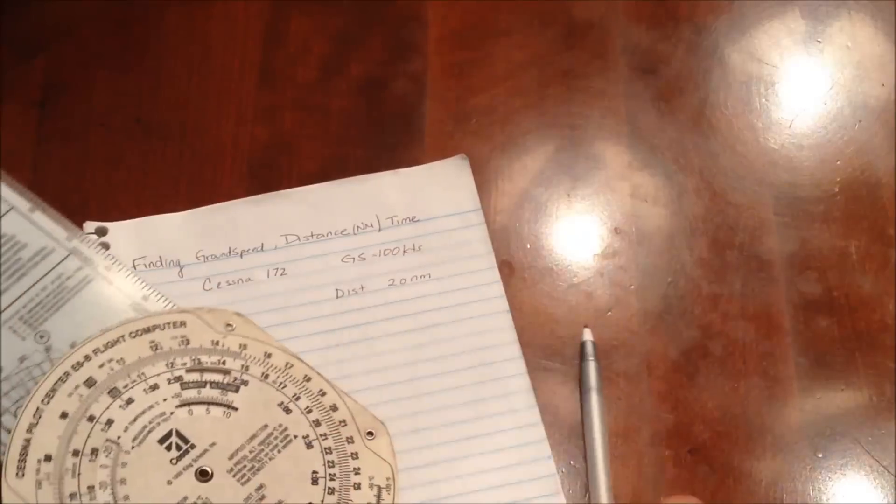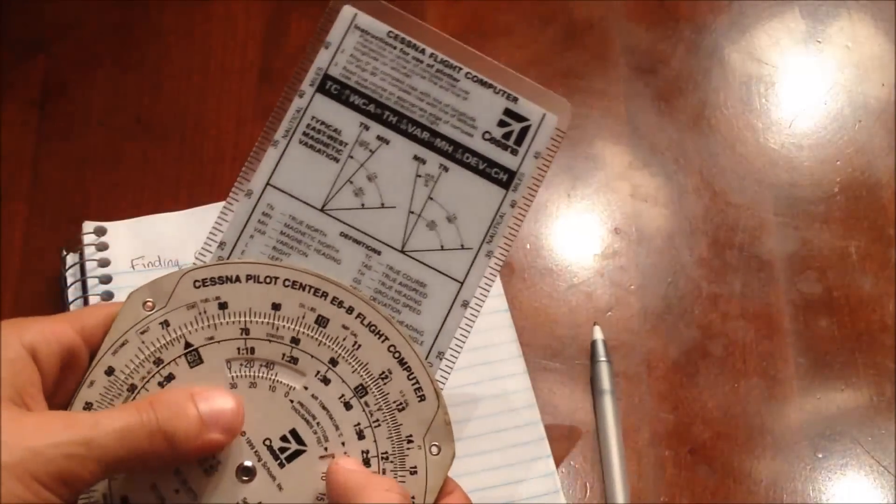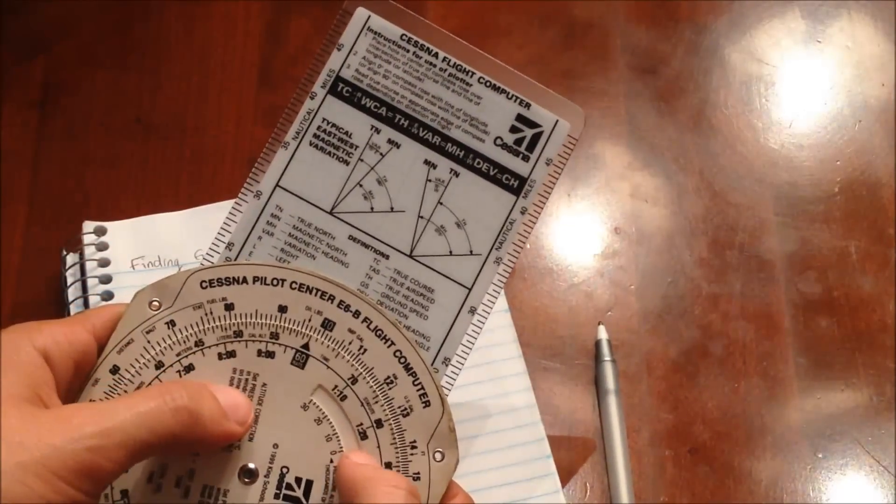So for an aircraft like a 172 with a ground speed of 100 knots, we would have to rotate so that the diamond is on top, correction, on the bottom of the 10 marks. Notice here.